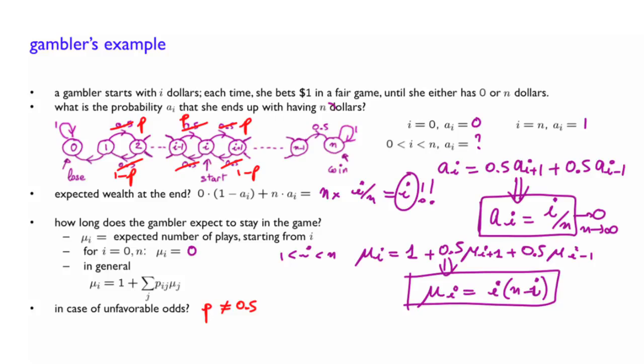So you might ask the same question. Well, for the probability a_i, you still have 0 here. You still have 1 here. The formula that you would write here, instead of writing it this way, it would be, you start from here with probability p, you end up here. And with probability 1 minus p, you end up there. And the expression that you get for a_i, if you define r to be (1 minus p) over p, you will see that a_i is going to be (1 minus r^i) over (1 minus r^n).